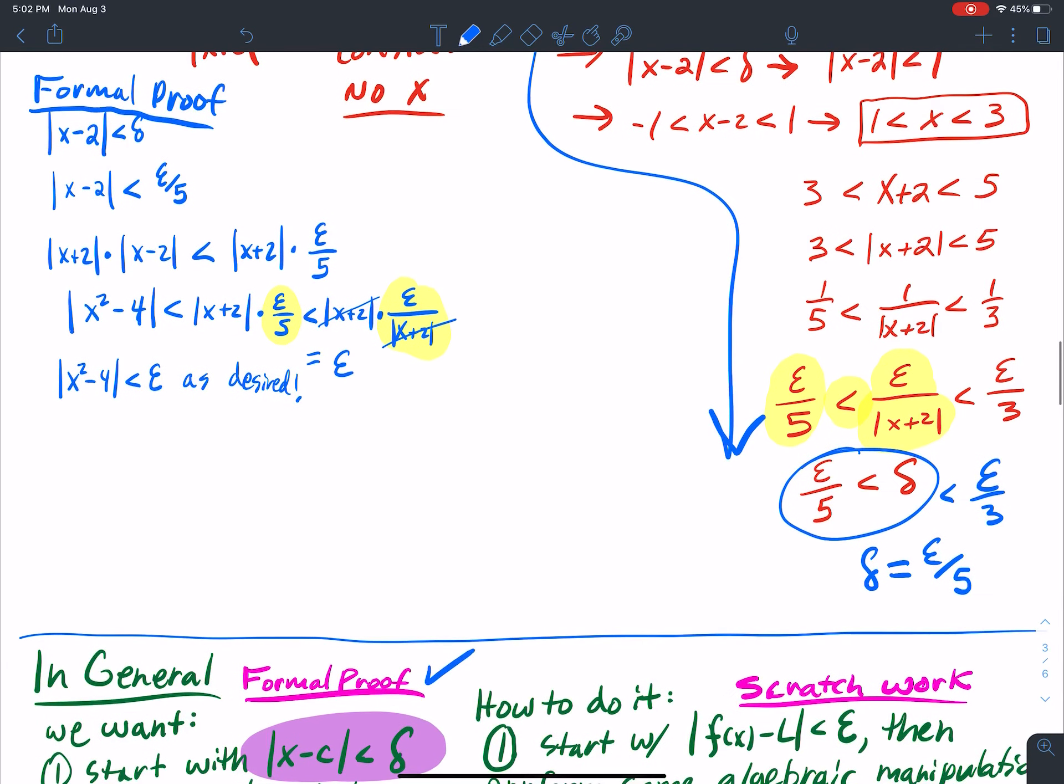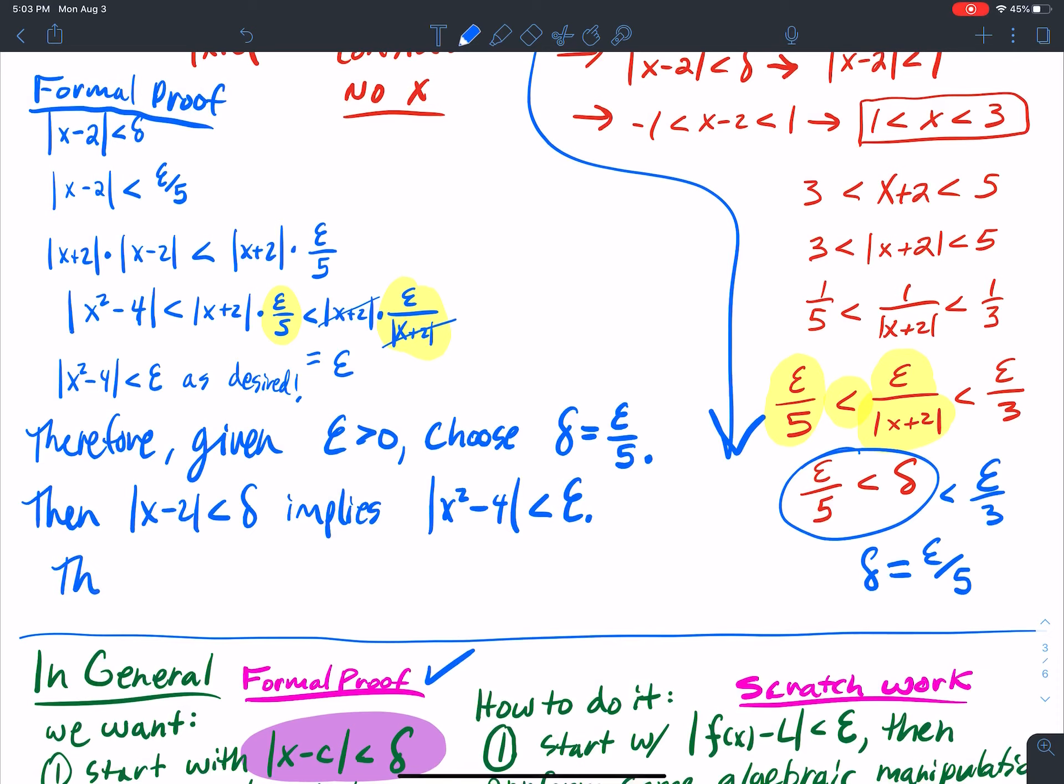Then I'm going to write it out. Therefore, given epsilon greater than 0, choose delta equal to epsilon divided by 5. Then absolute value x minus 2 less than delta implies absolute value x squared, which is the function minus the limit 4, is less than epsilon. Thus, the limit as x approaches c, which is 2, of the function f of x, x squared equals the limit 4. So that's the formal proof set up right there.